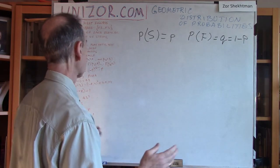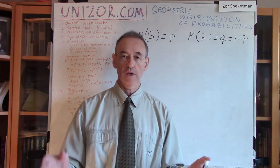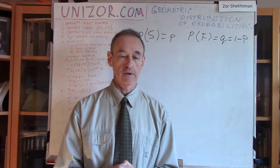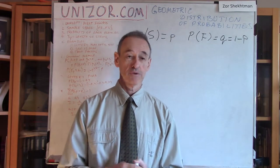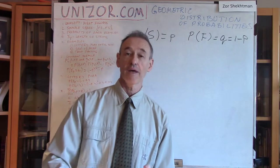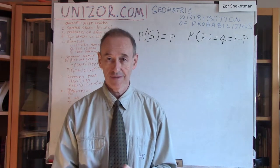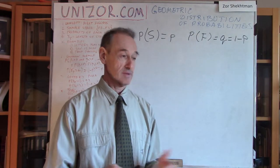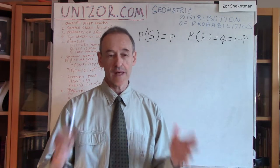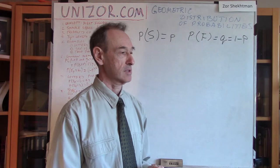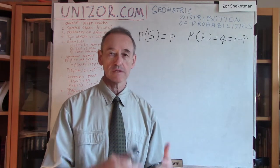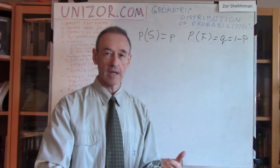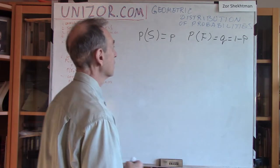Another example: let's say a family wants to have a daughter. They try, and it's a son. They say okay, let's try again. If it's a son again, they try again — until they have a daughter. If the probability of having a daughter is greater than zero, then eventually a daughter will be born, and that would be the end of the experiment. So the Bernoulli trial is giving birth to a child, considered a success if it's a daughter and a failure if it's a son. They fail and fail until they succeed — that's also geometric distribution.